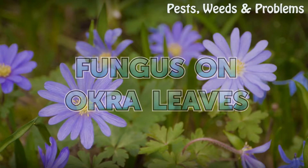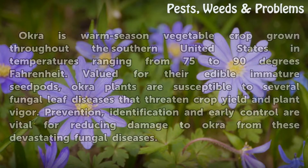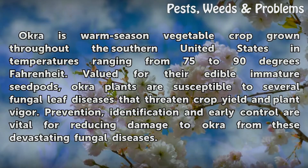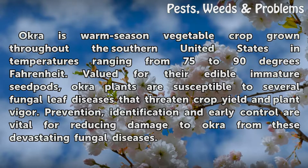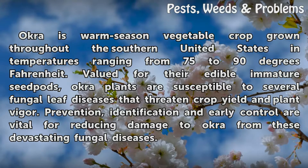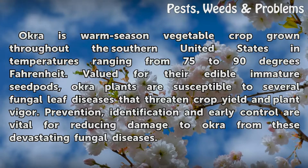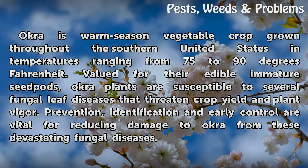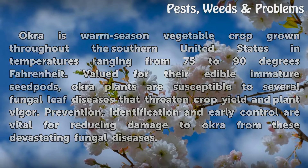Fungus on okra leaves. Okra is a warm season vegetable crop grown throughout the southern United States in temperatures ranging from 75 to 90 degrees Fahrenheit. Valued for their edible immature seed pods, okra plants are susceptible to several fungal leaf diseases that threaten crop yield and plant vigor. Prevention, identification, and early control are vital for reducing damage to okra from these devastating fungal diseases.